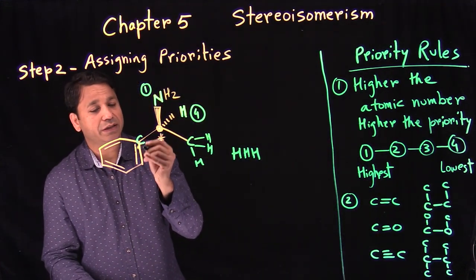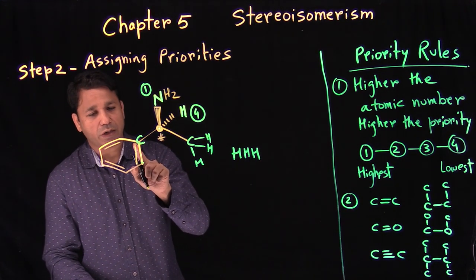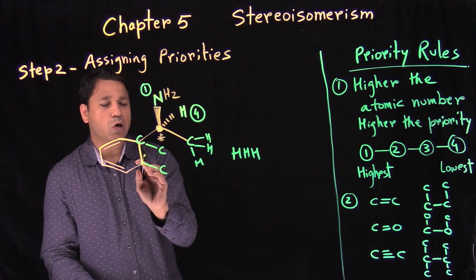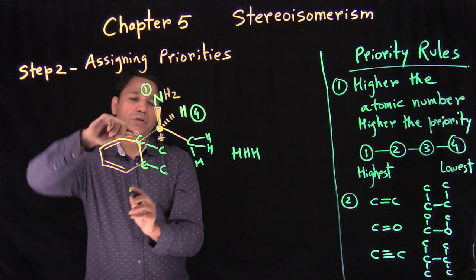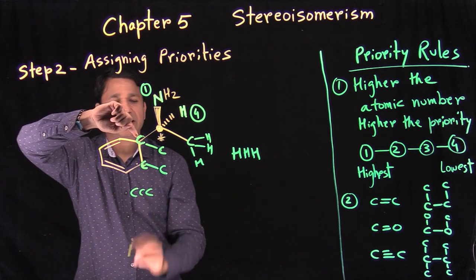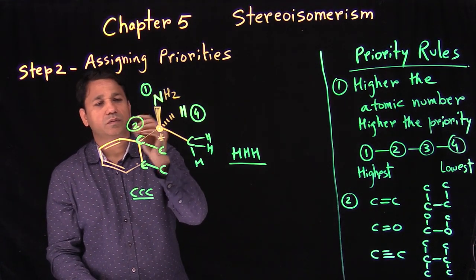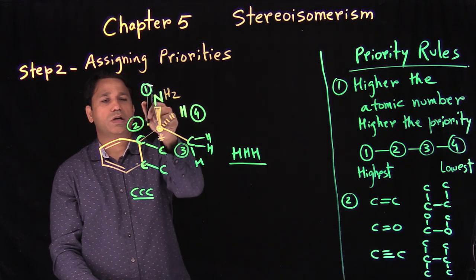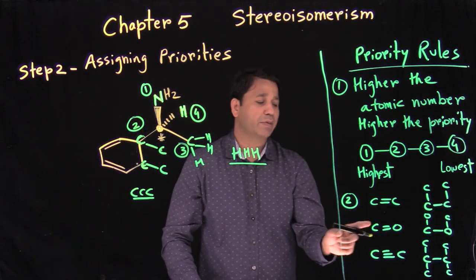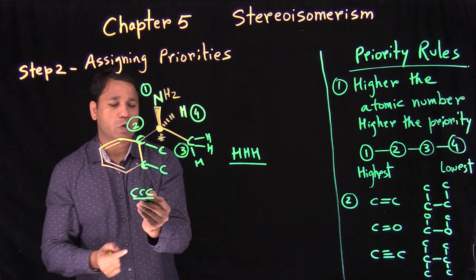So if you have a carbon-carbon double bond, you split it: that carbon is treated as attached to a carbon and a carbon. Physically, you can write it like this, or just count it twice. So looking at that carbon, what's attached further is carbon, carbon, and carbon — C, C, C. That gives the higher priority, so this group gets number two priority and the other gets number three.